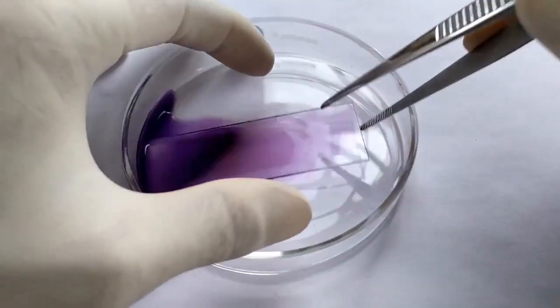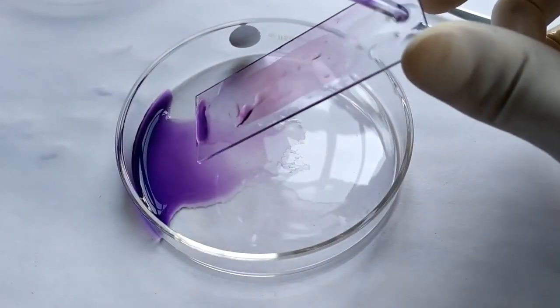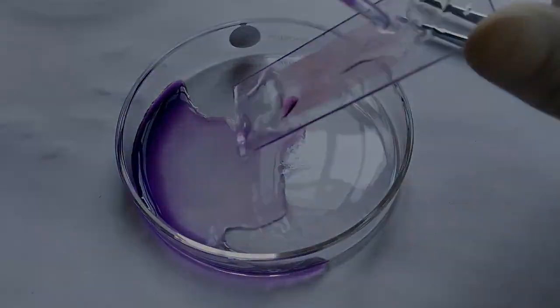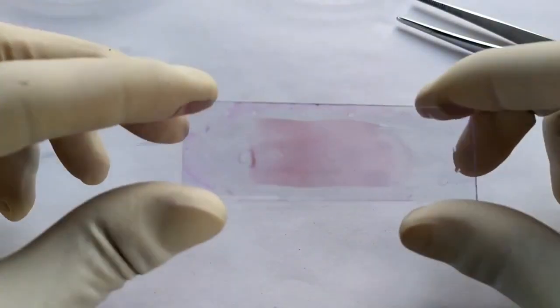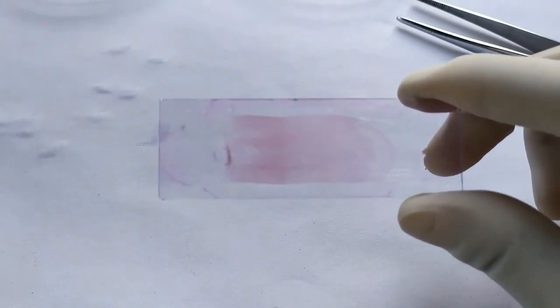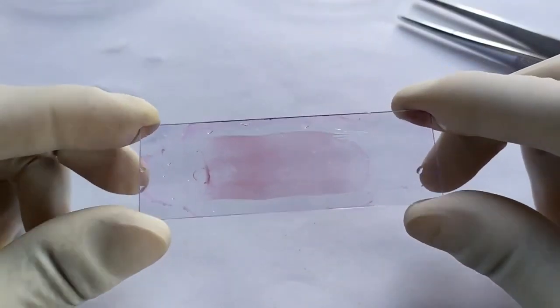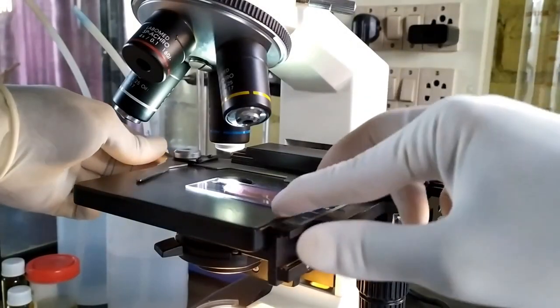Drain the slide and wash with distilled water. Proper staining results in a blood smear that is rose pink in color. Air dry the slide while keeping it in an inclined position. The slide is now ready for observation under the microscope.